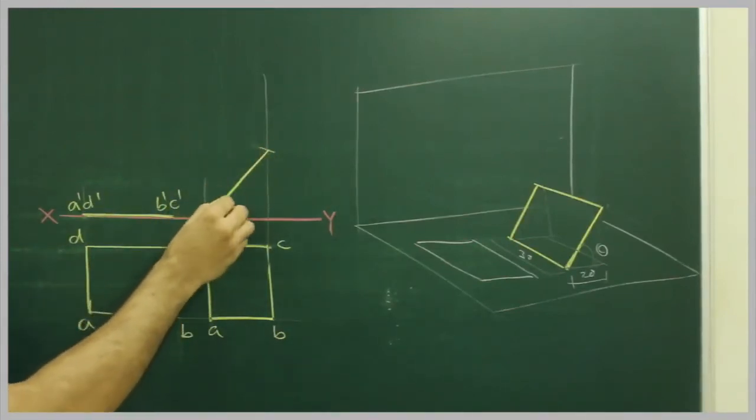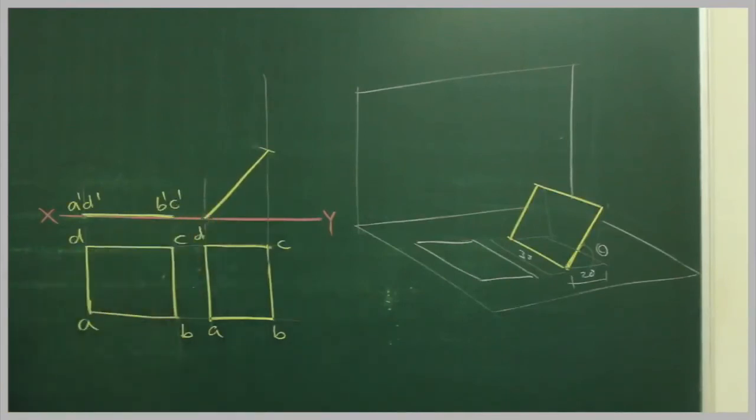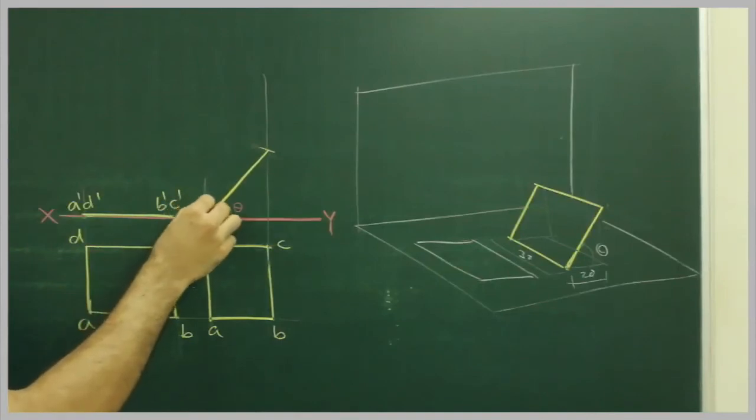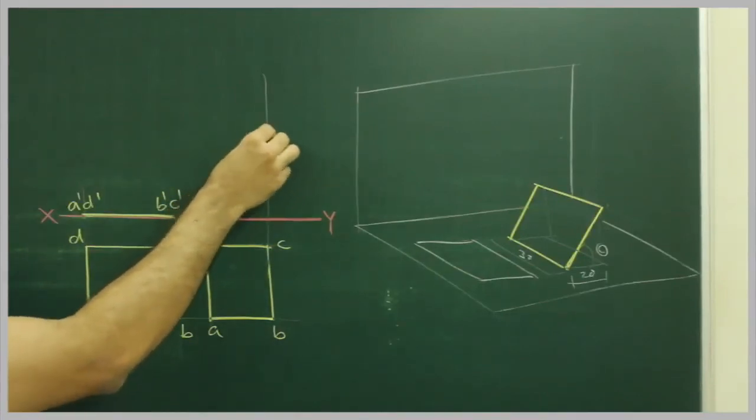So you get this angle, which is theta. I can mark any distance, A dash D dash to D dash C dash.